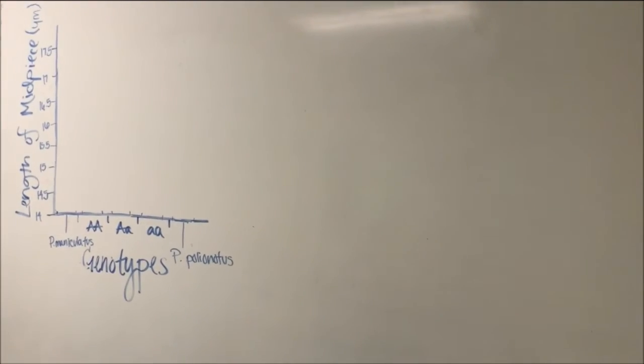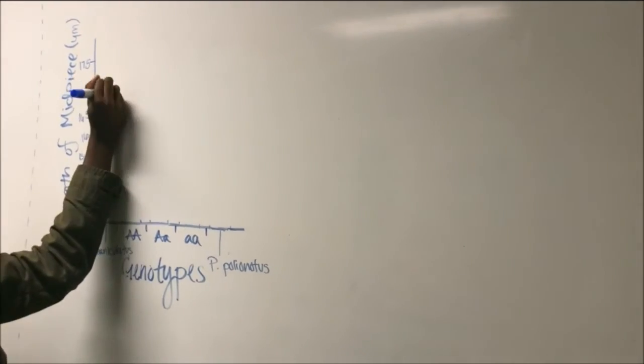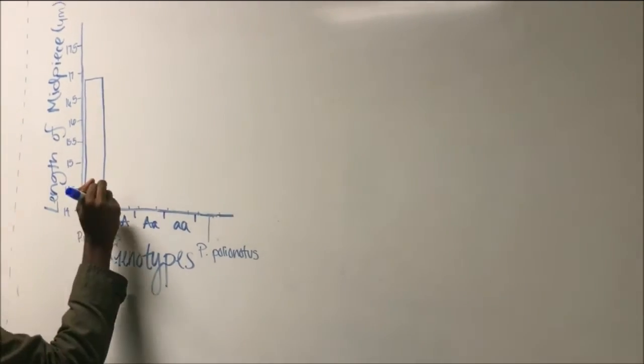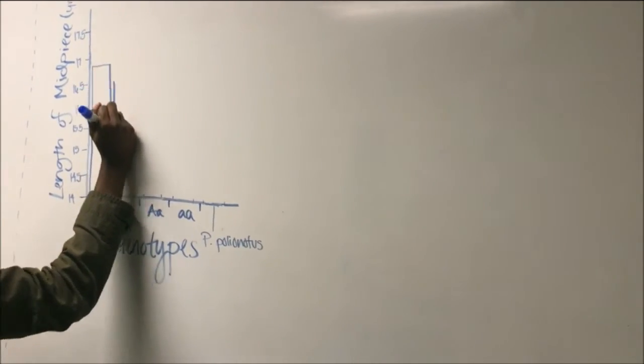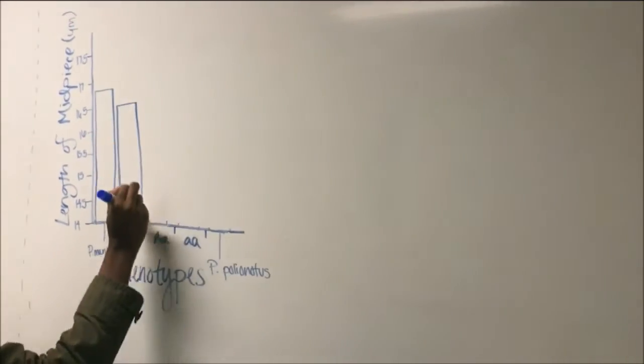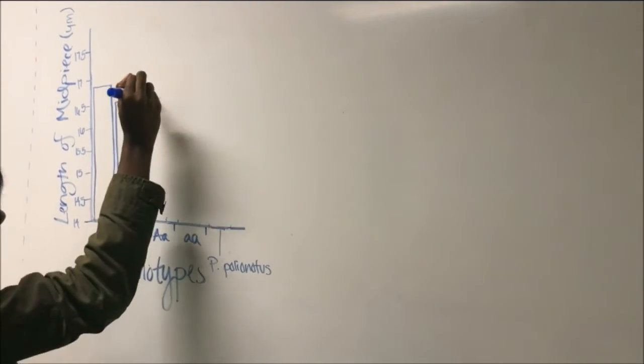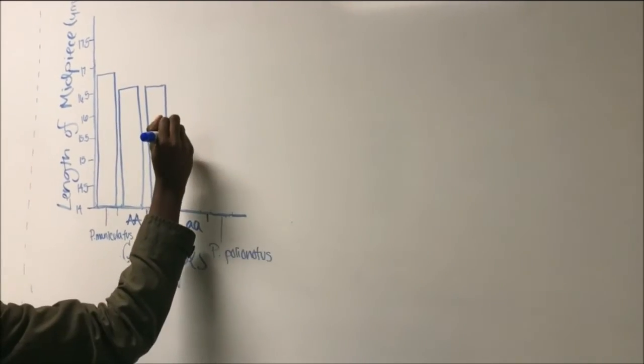After collecting data of average midpiece lengths among each genotype and calculating standard error, researchers compared the average midpiece lengths of the F2 hybrids to those mice from the original laboratory colony using a bar graph. On the x-axis are the genotypes of the F2 offspring.